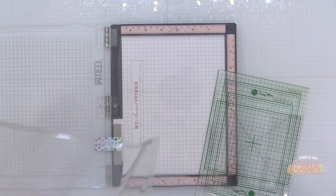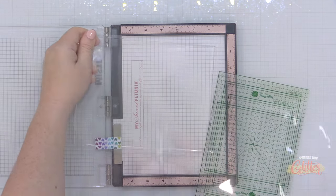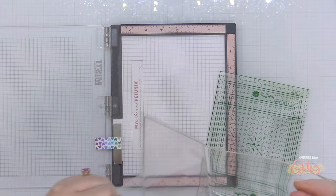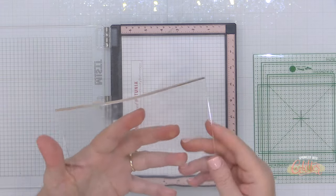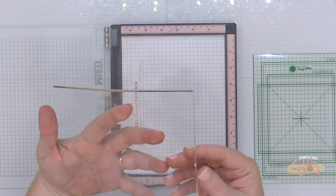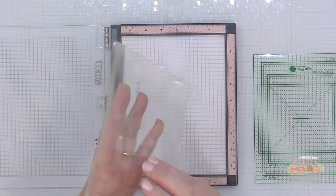So I've started by removing that black foam pad from my Misti and now I'm removing the protective covers from my Waffle Flower grip mat. Now this is the one that's designed to fit inside the Misti stamping tool.